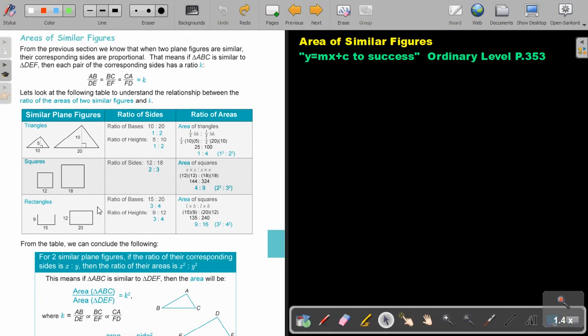And the same, the last one, a rectangle. The sides, it's 3 to 4. Area, so area of a rectangle, length times breadth, length times breadth. And if I simplify that ratio, I get 9 to 16. So that will give me an answer. If I square that one, square that one, I'll also get 9 to 16.